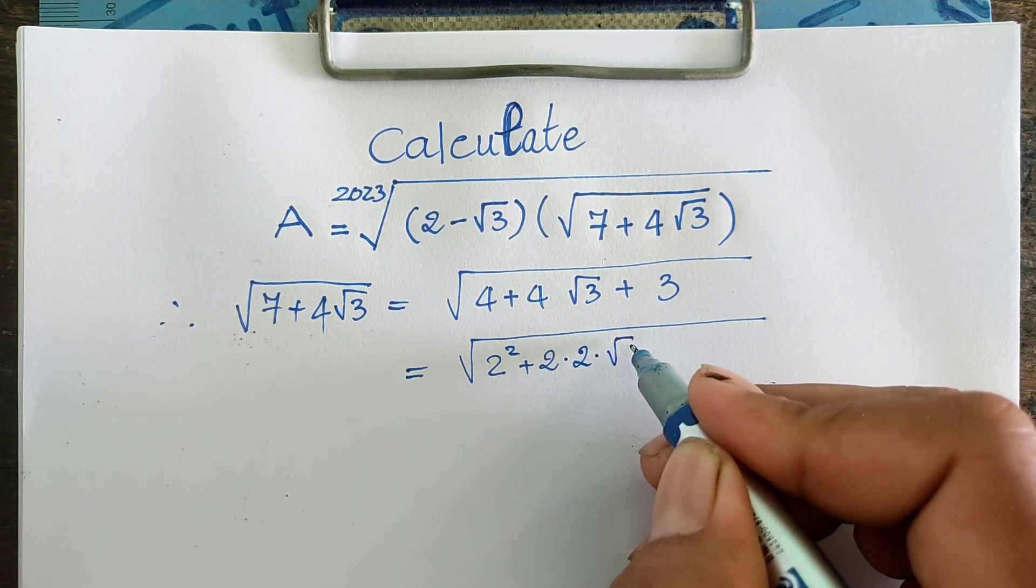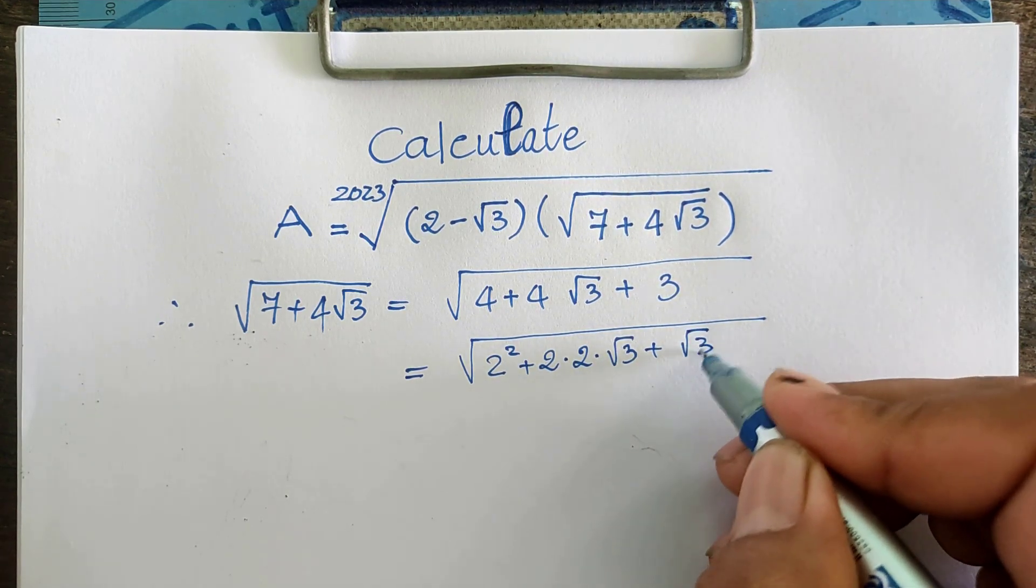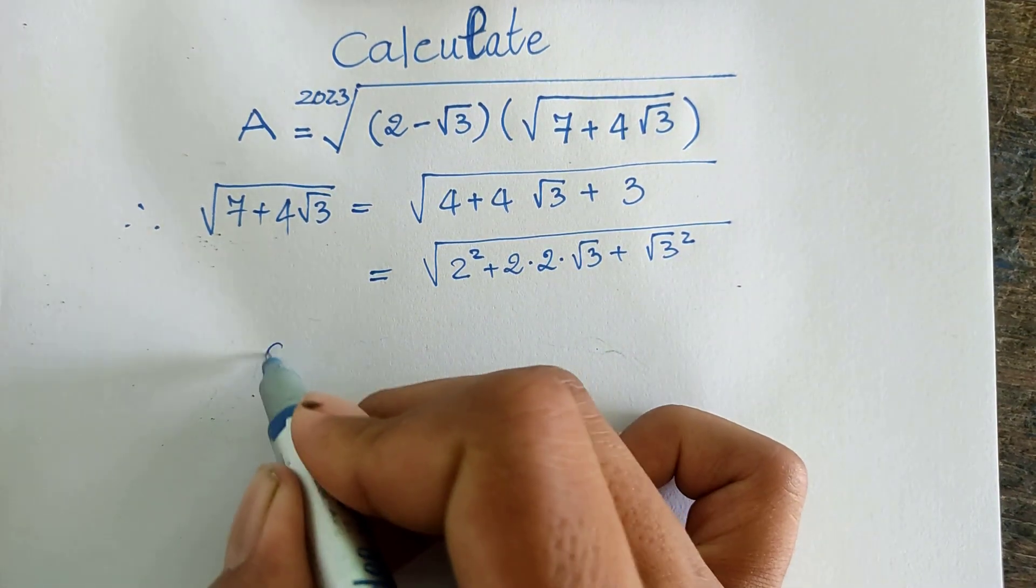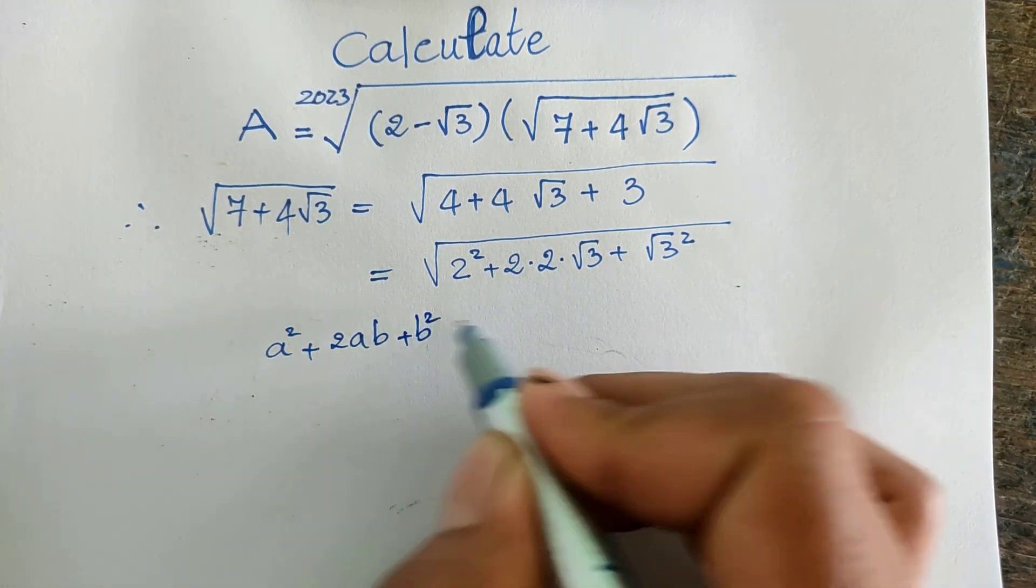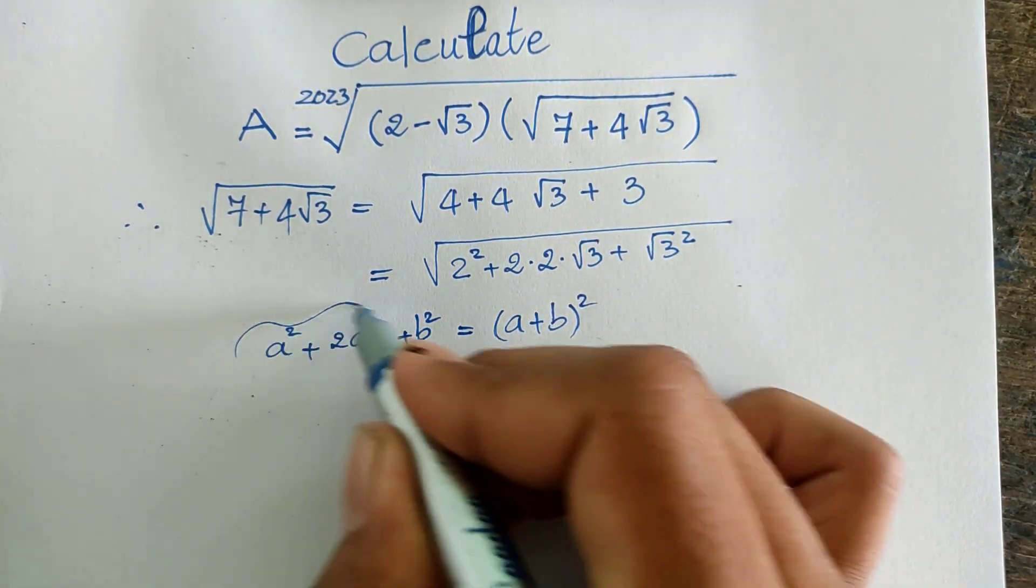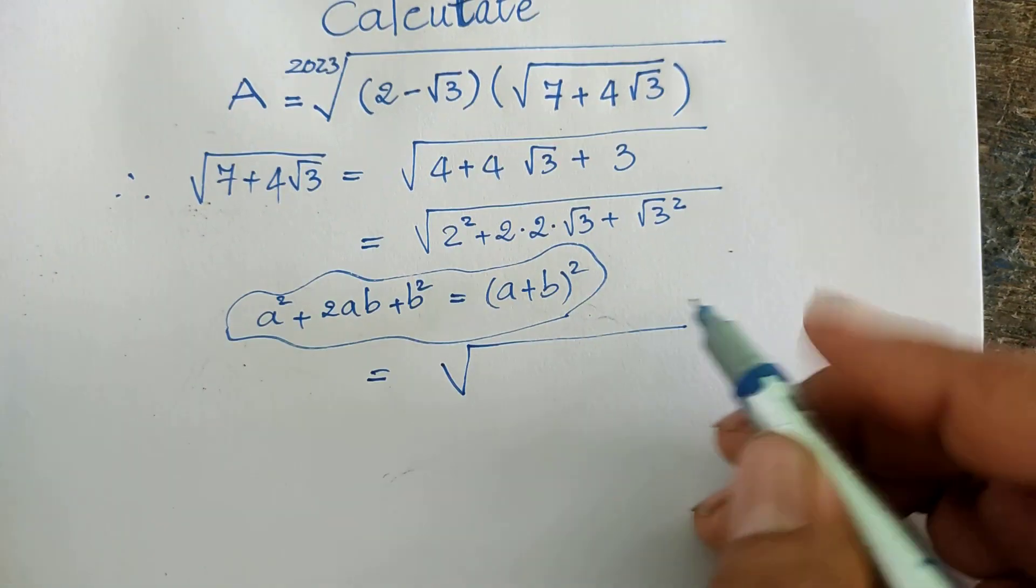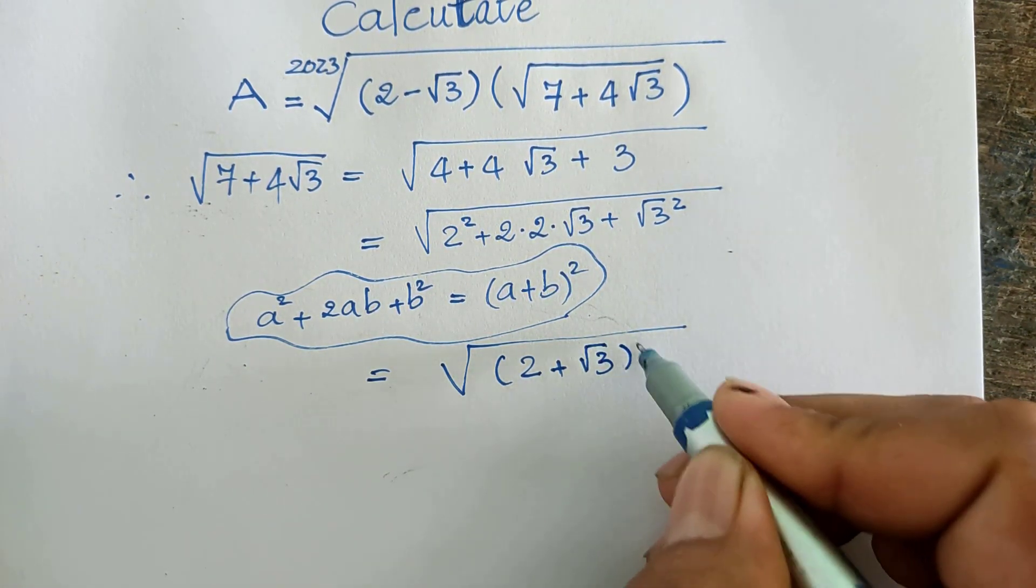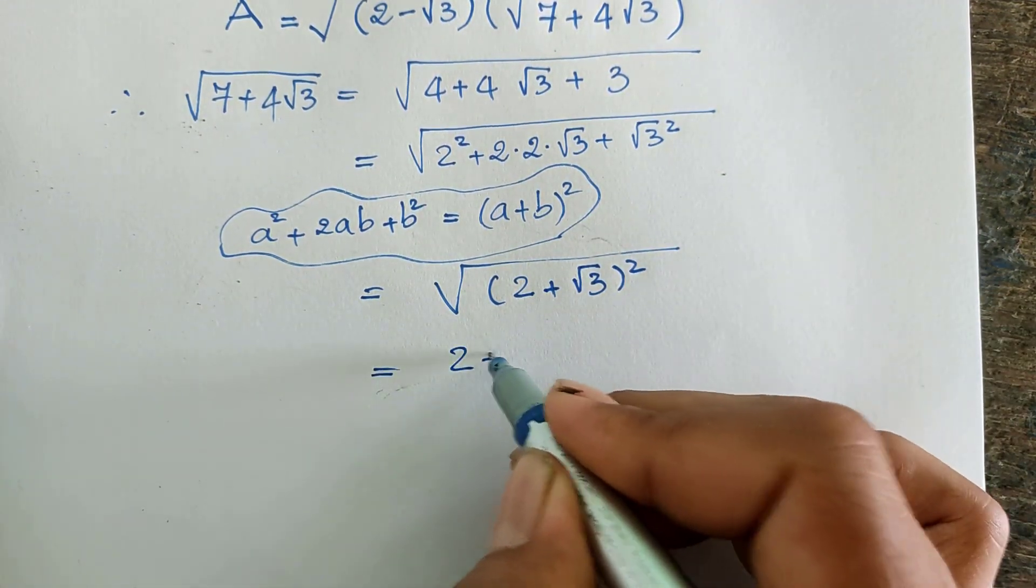...plus square root 3 squared. And this we use the rule that a squared plus 2ab plus b squared equals a plus b all squared. So now we get this equals the square root of 2 plus square root of 3, all squared. We simplify this root, so we get 2 plus square root 3.